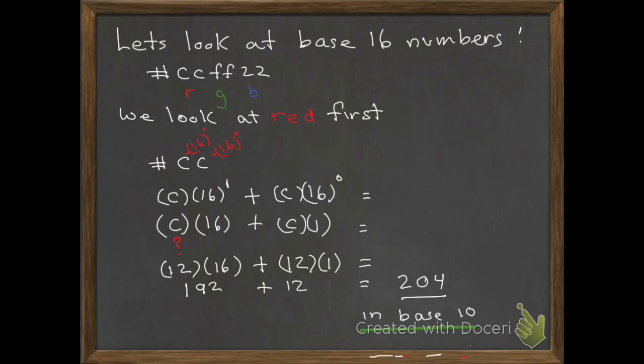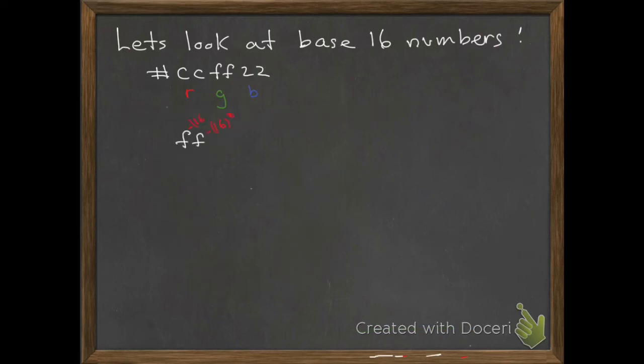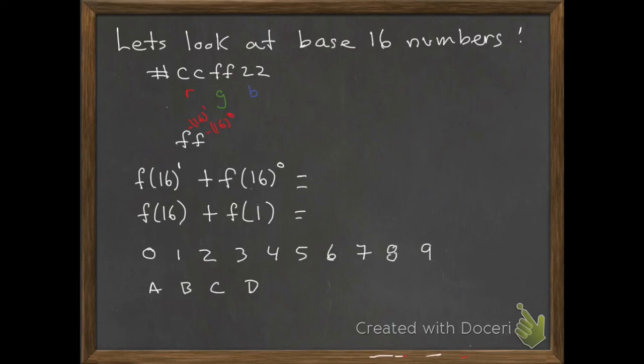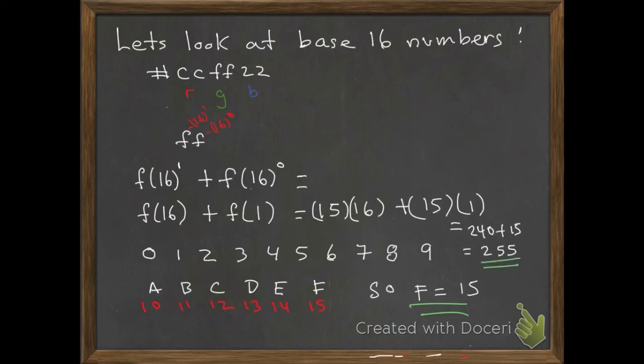Now we look at our other number, FF. And we do the exact same thing. Again, the F on the right is F times 16 raised to 0, and the F on the left is F times 16 raised to 1. Again, the question is, what is F? We quickly write that out and see that F is 15. We finish our calculation and find 240 plus 15 equals 255. So FF in hexadecimal is equal to 255 in the RGB or the base 10, and that's turned on at full intensity.